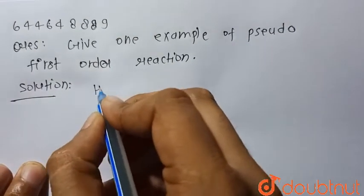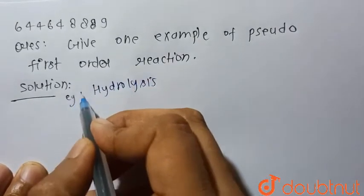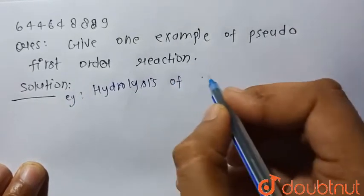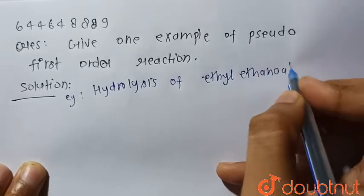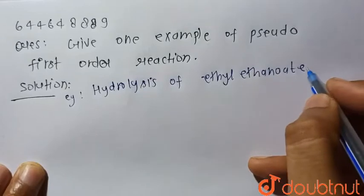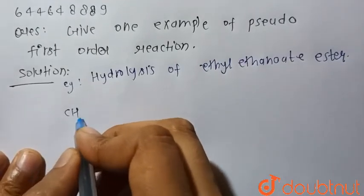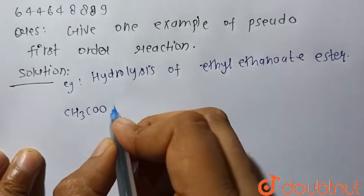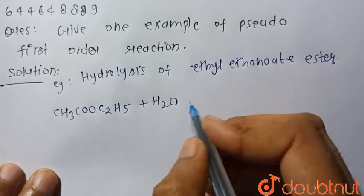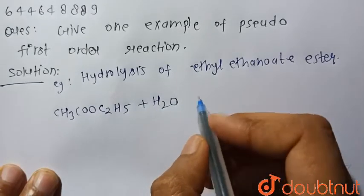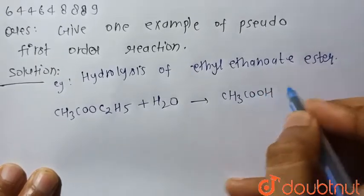So we know that an example of a pseudo first order reaction is the hydrolysis of ethyl ethanoate, which produces acetic acid and ethanol.